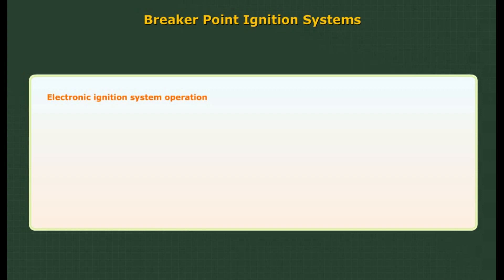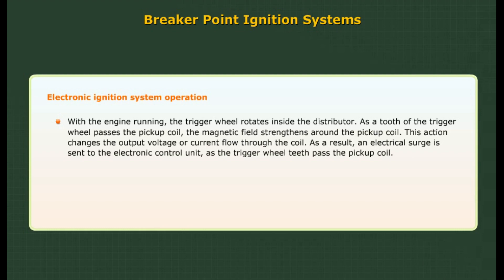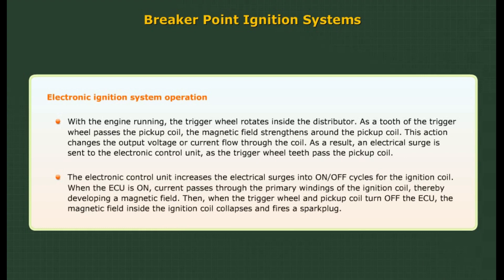Electronic ignition system operation: With the engine running, the trigger wheel rotates inside the distributor. As a tooth of the trigger wheel passes the pickup coil, the magnetic field strengthens around the pickup coil, changing the output voltage or current flow through the coil. An electrical surge is sent to the ECU as the trigger wheel teeth pass the pickup coil. The ECU converts these electrical surges into on/off cycles for the ignition coil. When the ECU is on, current passes through the primary windings, developing a magnetic field. When the trigger wheel and pickup coil turn off the ECU, the magnetic field collapses and fires the spark plug.